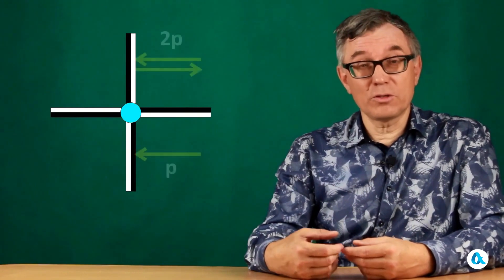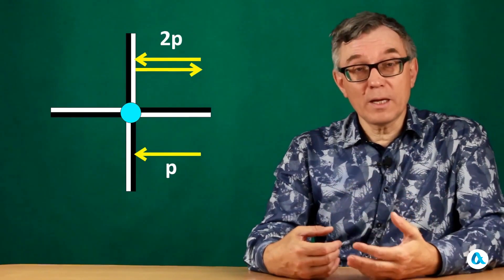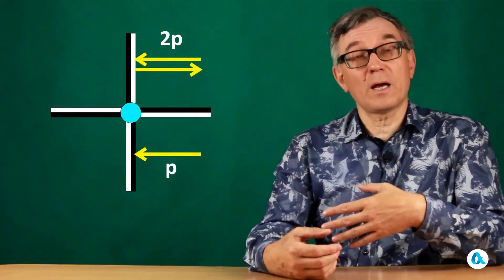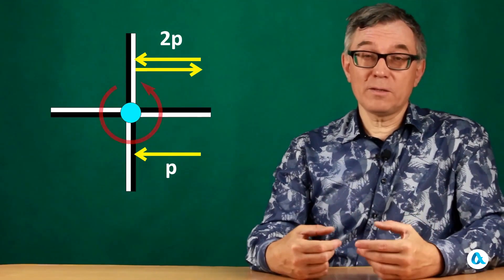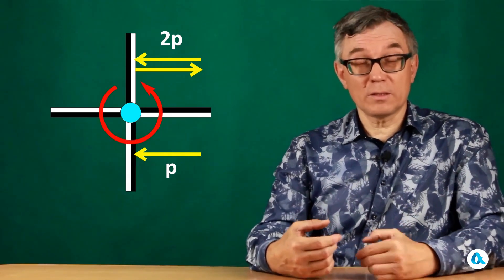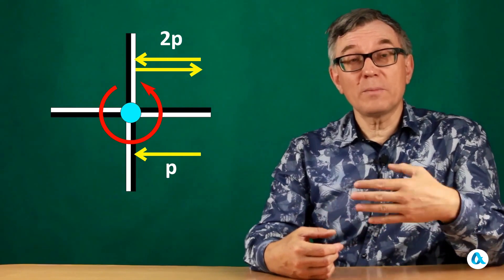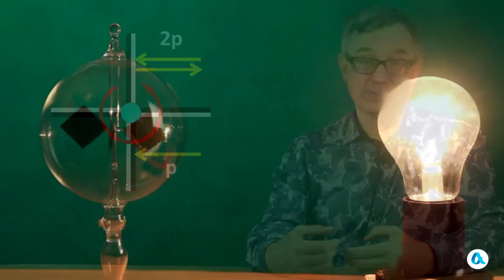However, he was wrong because when light falls on a mirrored surface, it transfers twice as much momentum as when it is absorbed by a darkened surface. And therefore, as a result of this particular phenomenon, the radiometer should rotate with its blackened surface facing forward from the light source. But in reality, it rotates with its mirrored surface forward.